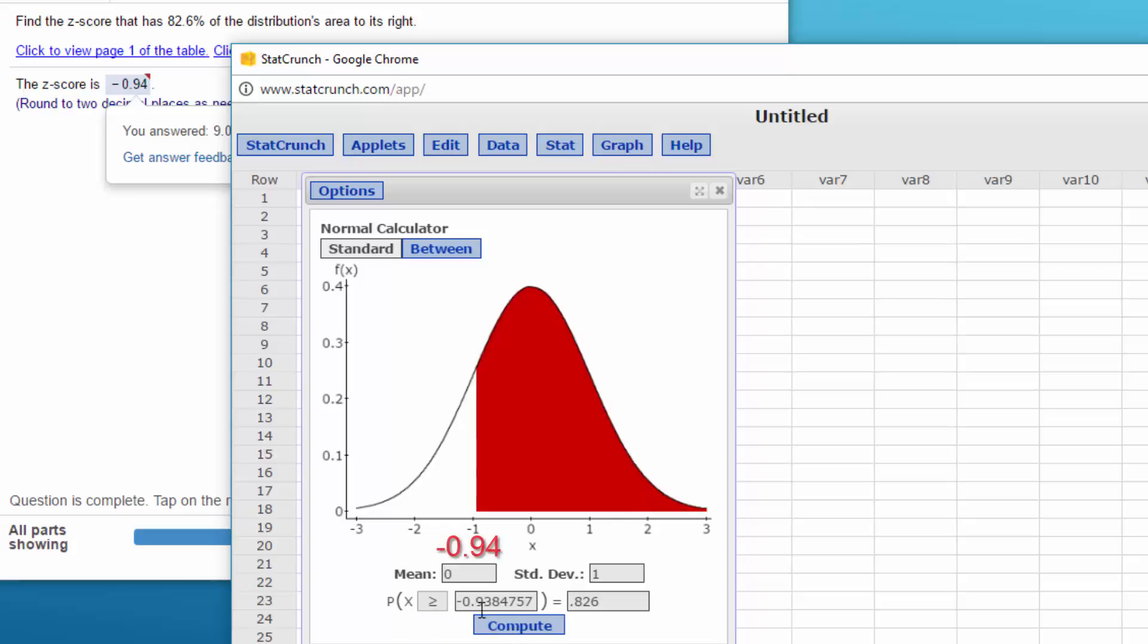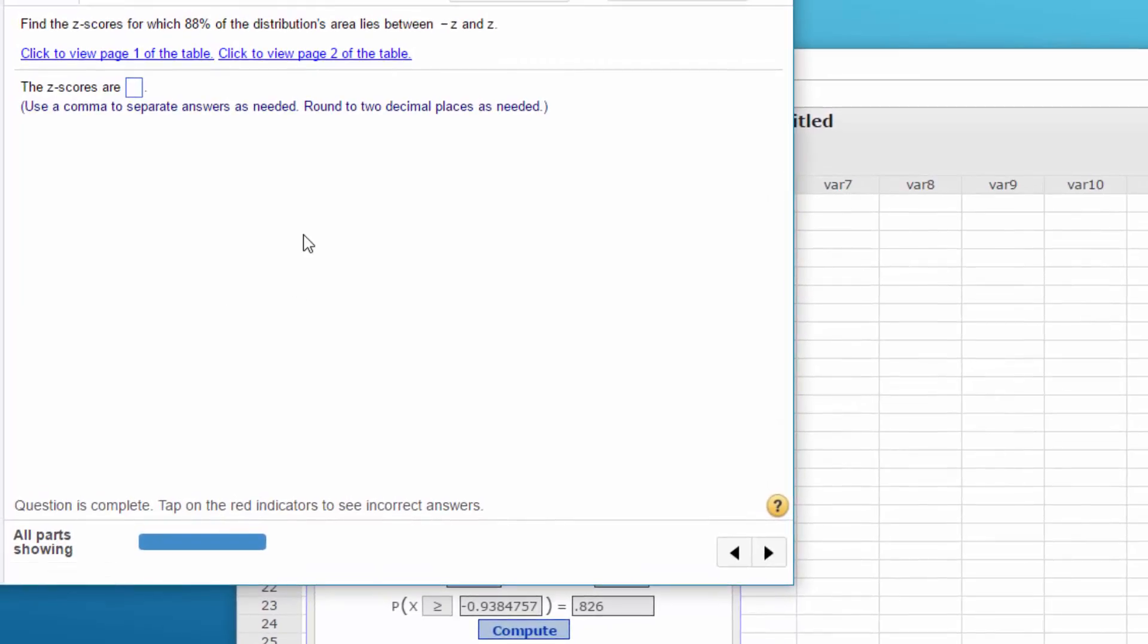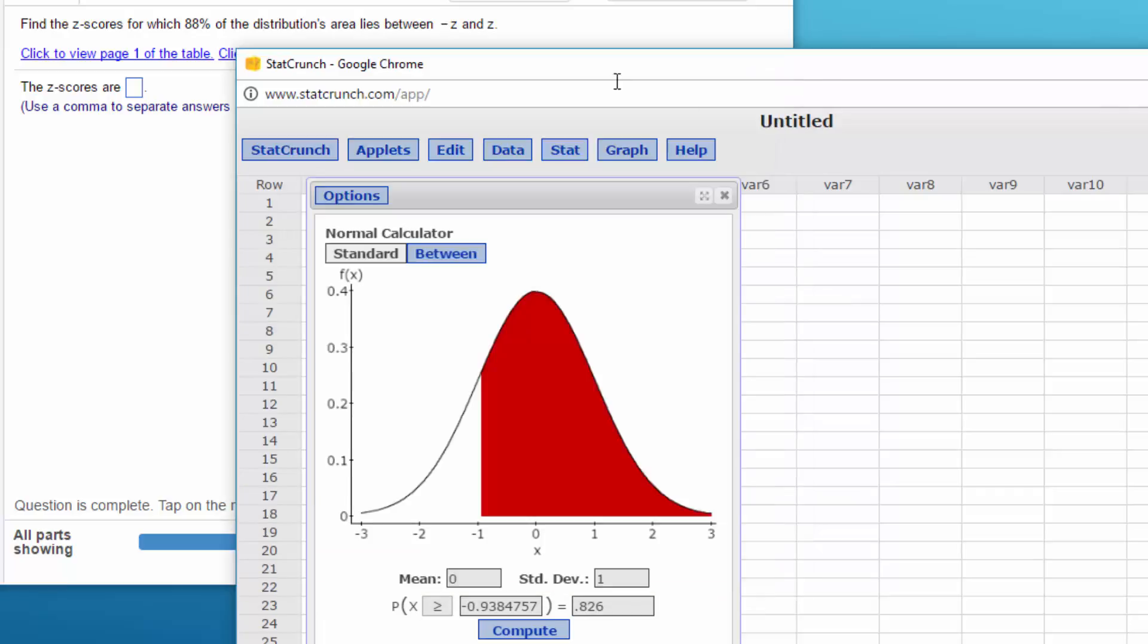Let's go to the next problem, which you didn't answer. Find the z-scores for which 88% of the distribution area lies between minus z and plus z.